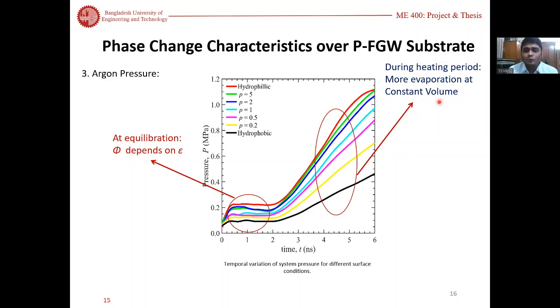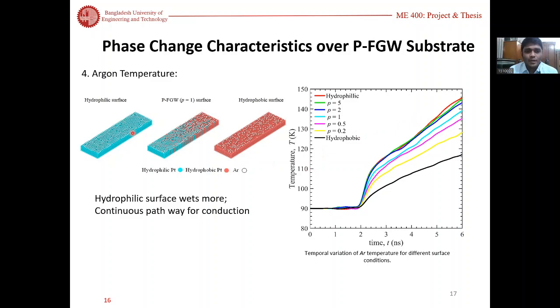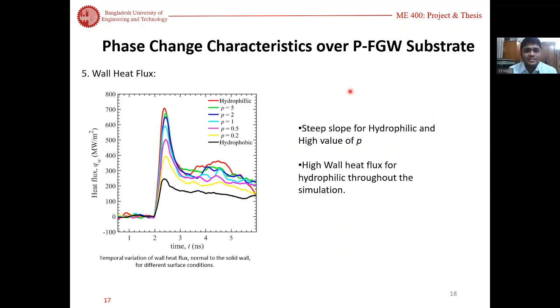For the heating period we got higher pressure at high value of p because high p results in high evaporation number in constant volume, which results in high pressure. For argon temperature, the hydrophilic surface works more and creates a continuous way for heat conduction and the heat transfer becomes smooth, so the temperature is high. As the temperature is smooth, we also get high heat flux. Higher value of p indicates high heat flux.